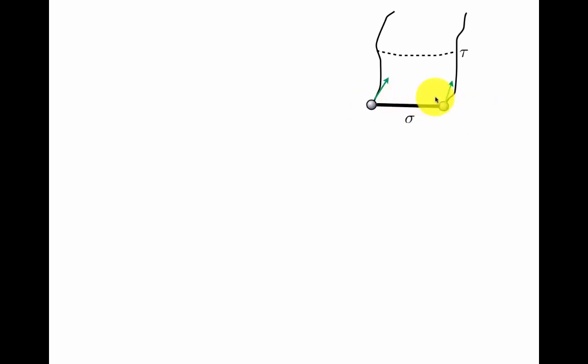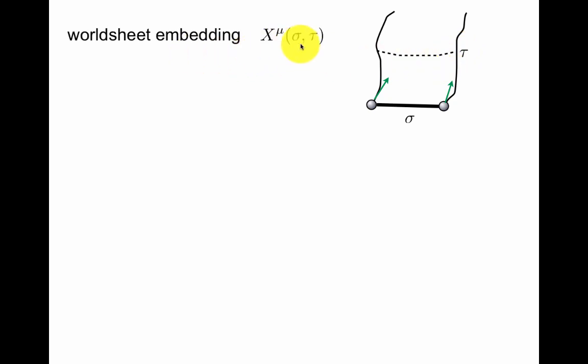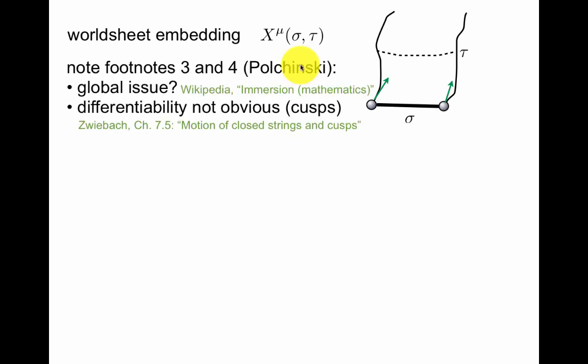What about a string? If you have a string with two endpoints — an open string — it can move in spacetime and its ends describe worldlines. Together they describe a worldsheet. So now we have two variables sigma and tau and we have an embedding of the worldsheet from sigma tau to spacetime, much like the point particle embedding, but now it depends on two coordinates sigma and tau. You might have wondered about the global issue already in the point particle case. This is discussed in footnotes 3 and 4 in Polchinski chapter 1. An immersion means that it doesn't double back on itself, and an immersion is differentiable, so this turns out to be not much of a problem. The formation of cusps on, for example, closed strings when a left-moving and a right-moving wave hit each other is a very interesting topic.